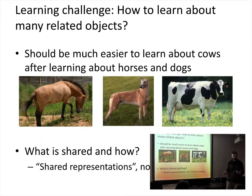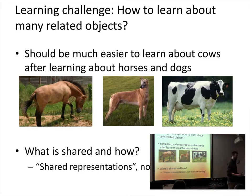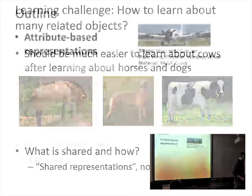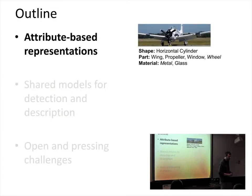A related challenge from a machine learning view is how do we learn about many related objects? Intuitively, if we're trying to learn about cows and we already know a lot about horses and dogs, it should be a lot easier. The key question is what do we share among these different object categories — what does a dog have in common with a cow that should allow us to more easily learn about cows? The key is really to think about the shared representation, not so much the transfer learning or multi-task view.